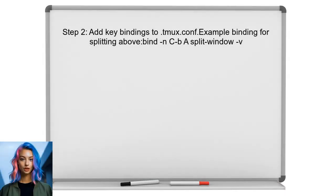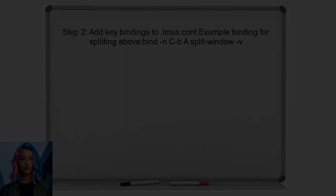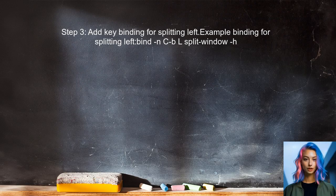Next, add specific key bindings to this configuration file. For example, to bind the shortcut Ctrl+B followed by the letter A for splitting a pane above, add the following line. Similarly, to bind a shortcut for splitting a pane to the left, add another line to the configuration file.